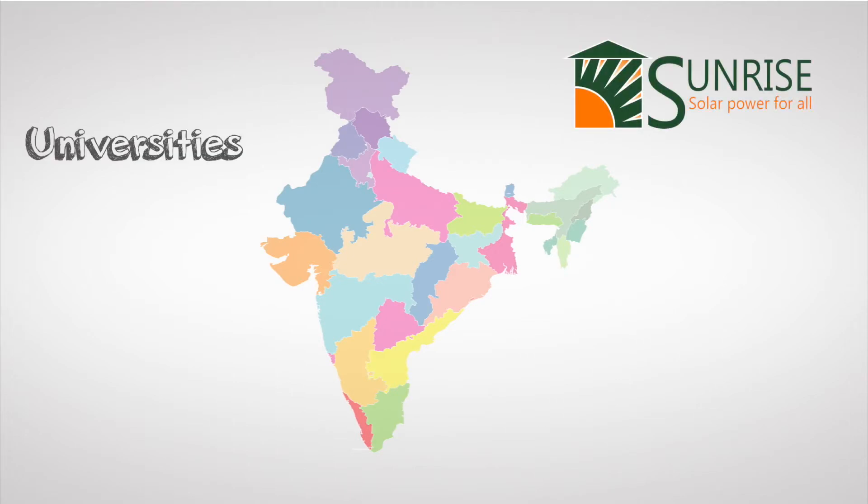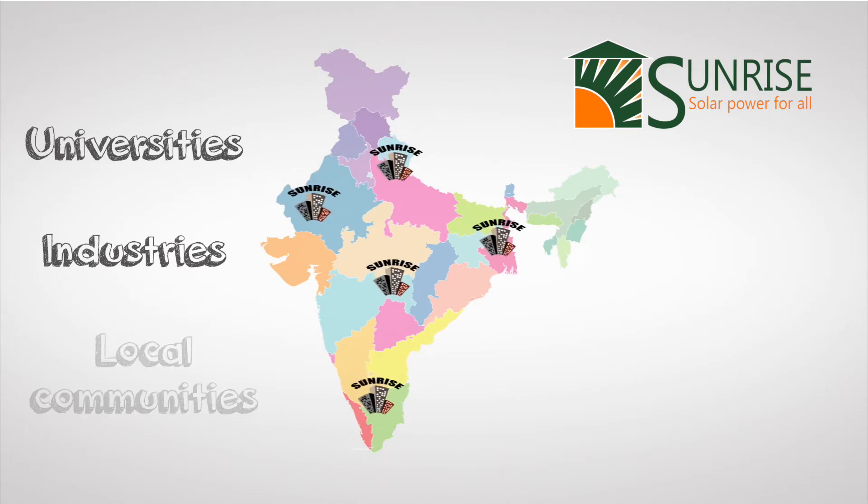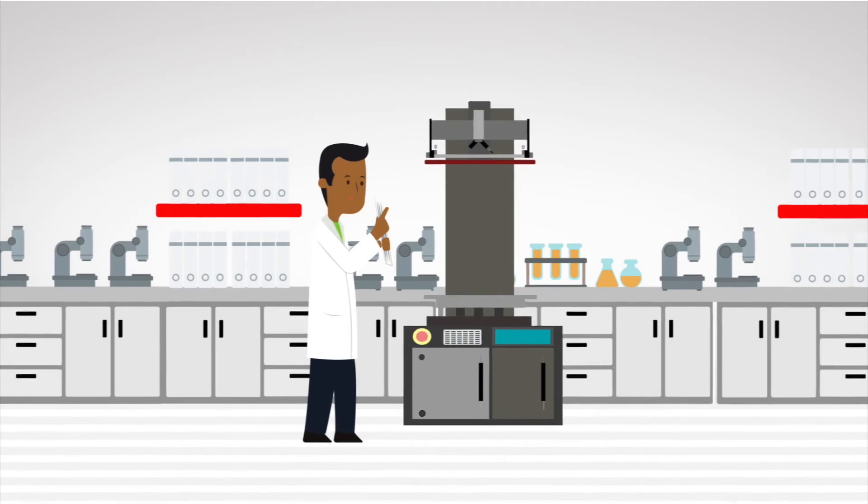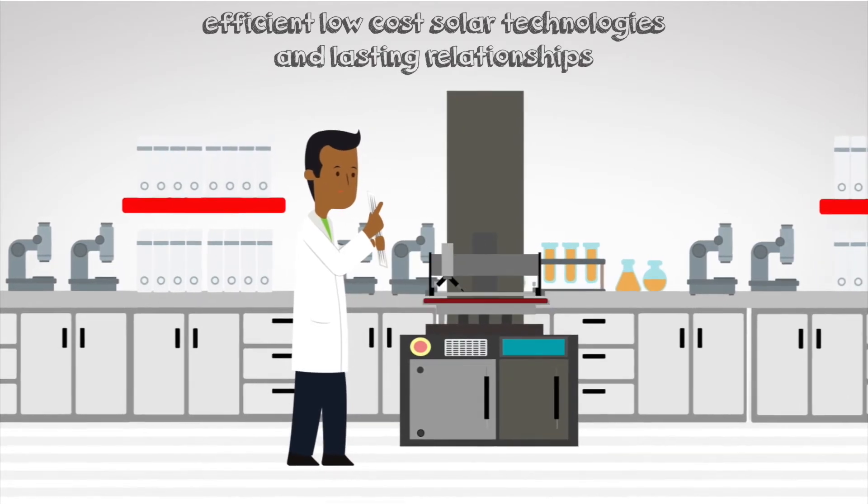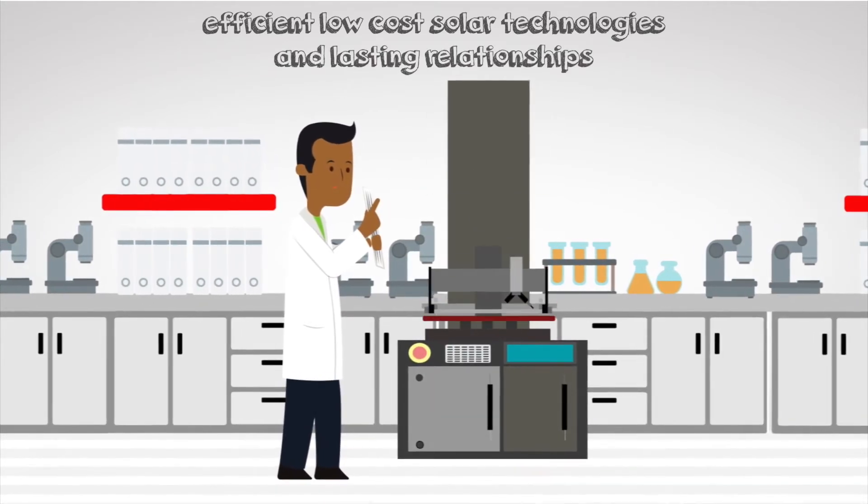Sunrise unites universities and industry from the UK and India. The project will work with local communities to build at least five demonstration buildings in rural India. It will develop efficient low-cost solar technologies and lasting relationships that help both countries to promote low carbon buildings.